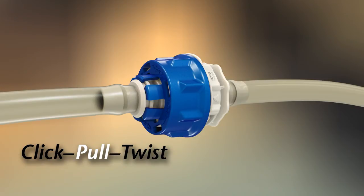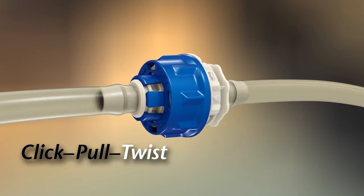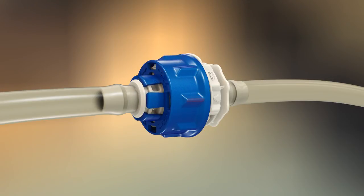To complete the connection, simply twist the blue lock ring clockwise until confirmed by the final Kolder click and alignment of the lock ring rib with the arrow indicator on the connector body.